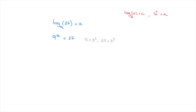Using those two results, we can rewrite this equation as 3 to the power of 2, all of which is raised to the power of x, equals 3 to the power of 3. On the left-hand side, these powers multiply together, which leaves us with 3 to the power of 2x equals 3 to the power of 3. Now that both sides are written as powers of the same number, we can get rid of the bases 3 and equate the exponents: 2x equals 3. Solving this equation, x equals 3 over 2. And that's the answer.